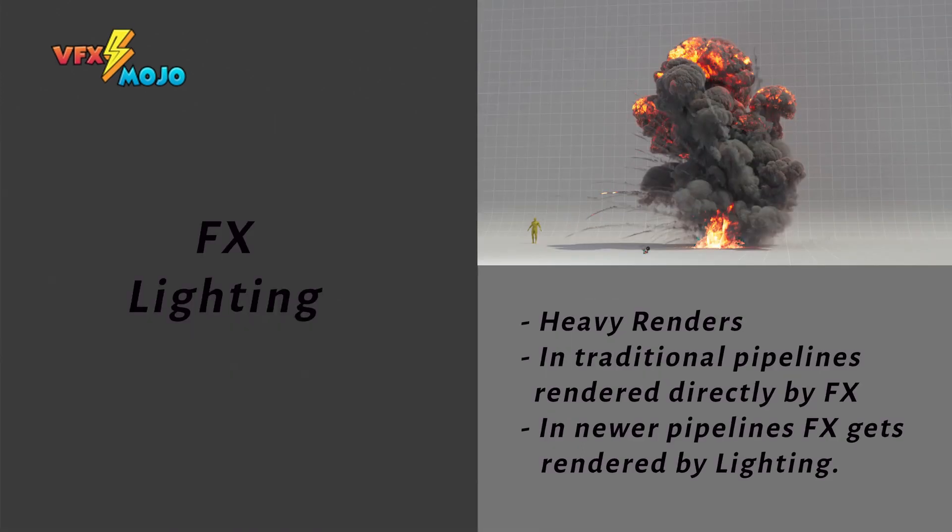In traditional pipelines, effects like volumes, explosions, fog, dust, etc. are rendered usually by effects artists. Lighting TDs would just create interactive lights based on locators or low-res effects meshes for their assets. Often effects doesn't even use light tricks, but just creates red, green and blue lights, which comp can use as masks to brighten or darken the volumes in 2D as needed.